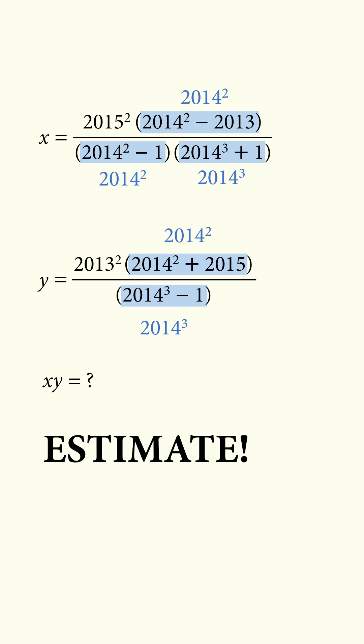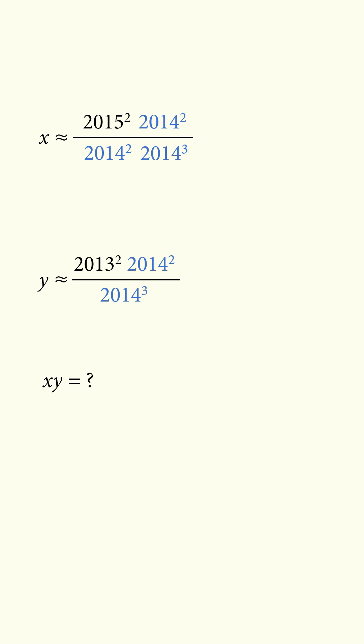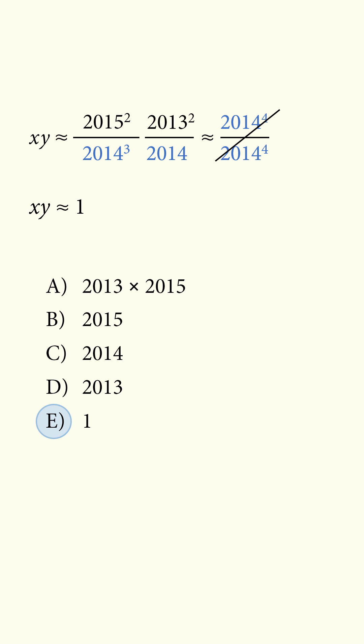We can apply this to get estimated values of x and y. We can simplify these estimated values further, then we can take the estimated product of x and y, and this will work out to be approximately 1. So once again, the answer is E.